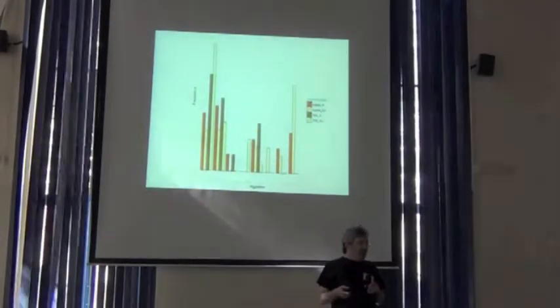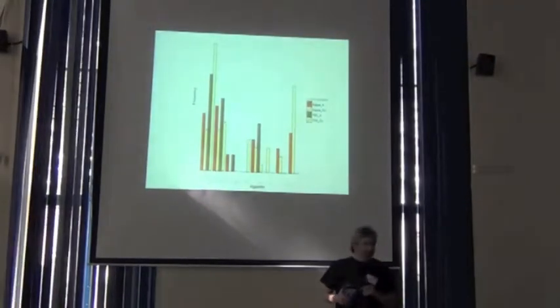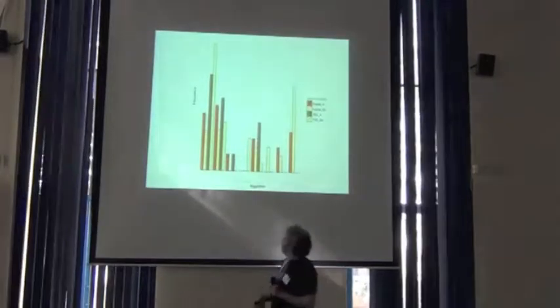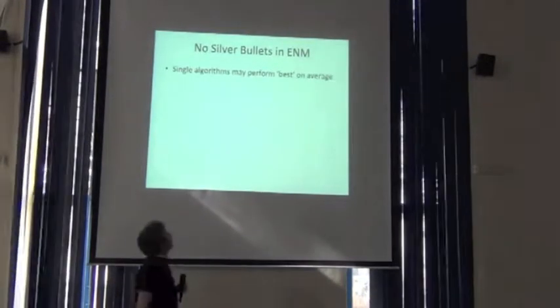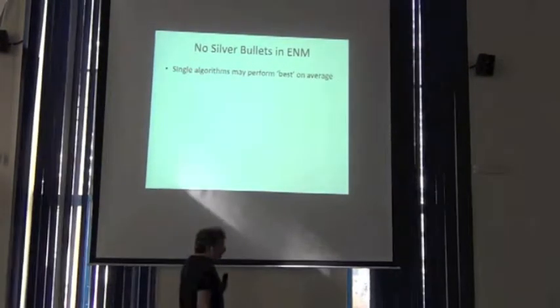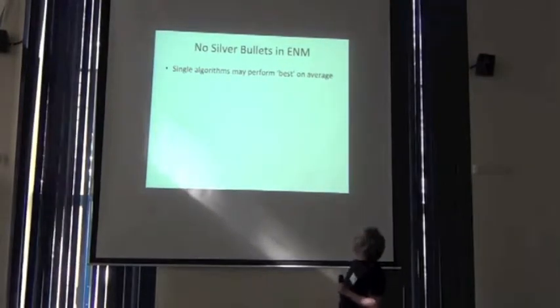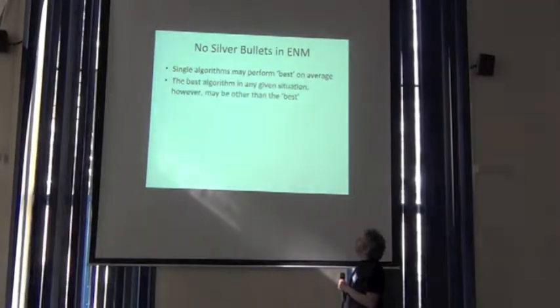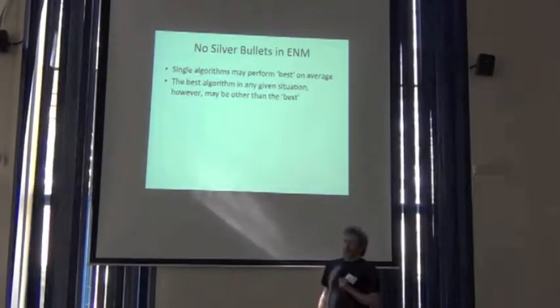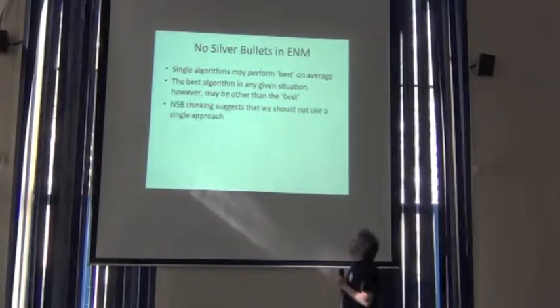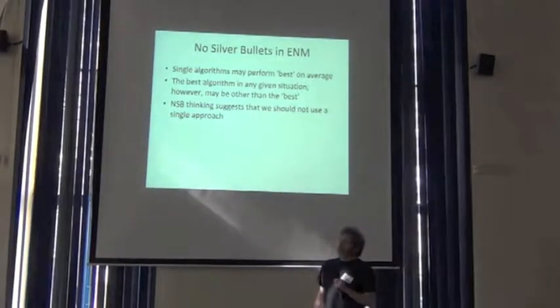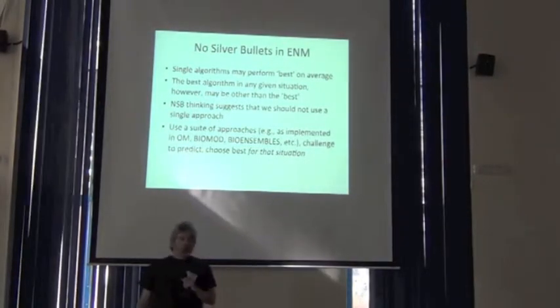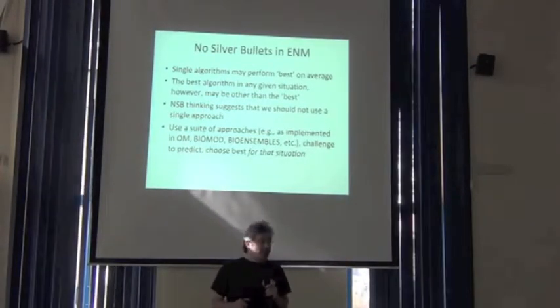We could have done this analysis based on Elith et al. data. Instead, we developed a separate dataset. So, no silver bullets in ENM. What this framework suggests is that many times single algorithms may be what performs best. This is kind of going against the idea of consensus that Richard mentioned. No silver bullet thinking suggests we should not use a single approach. Better use a suite of approaches. Challenge each with some predictive challenge relevant to that species and situation, and choose the best algorithm.